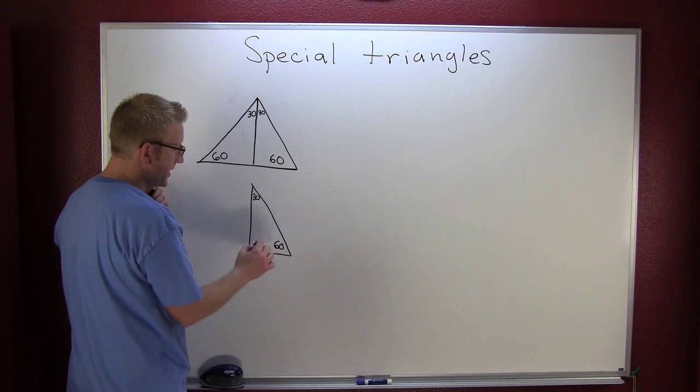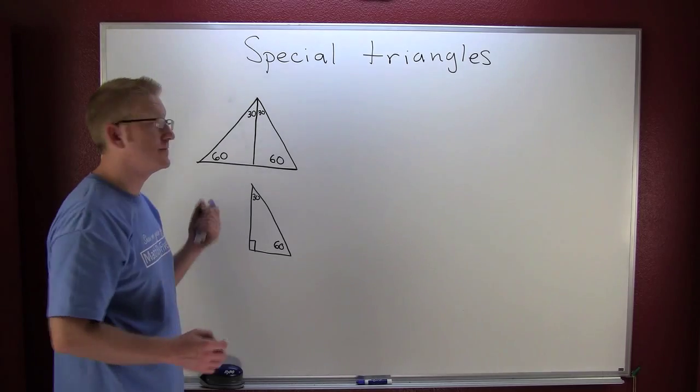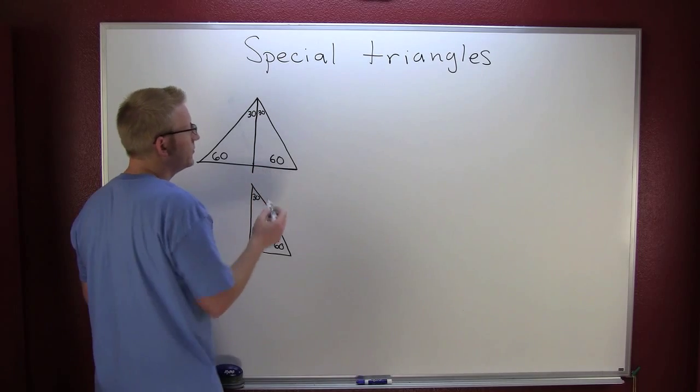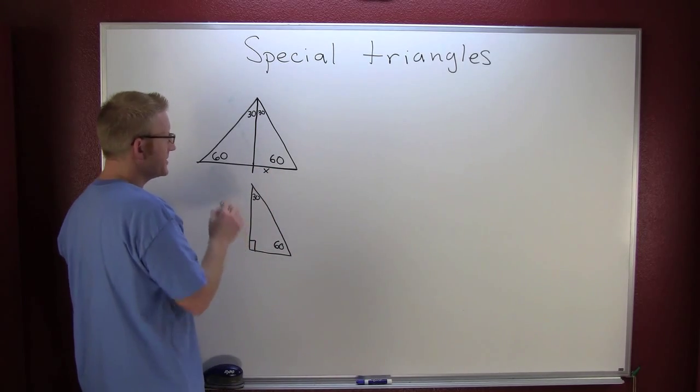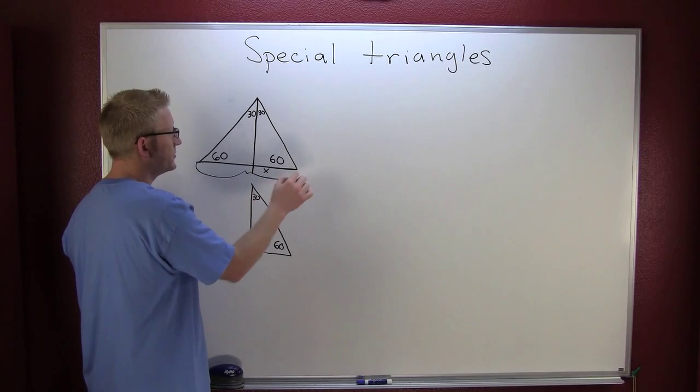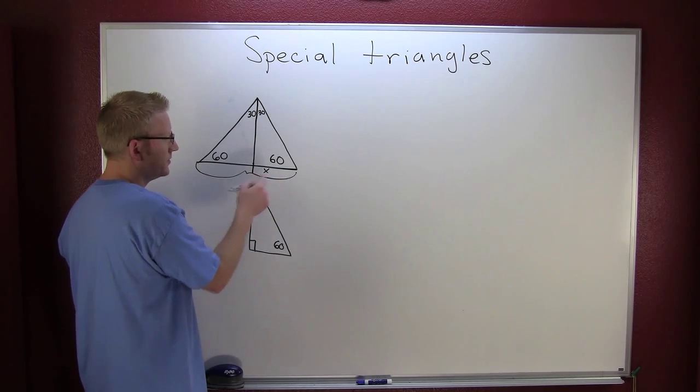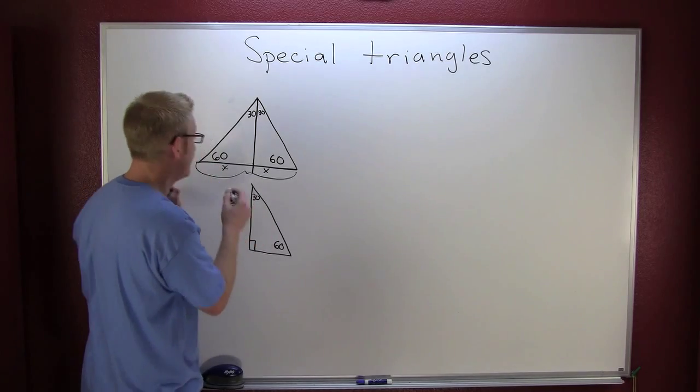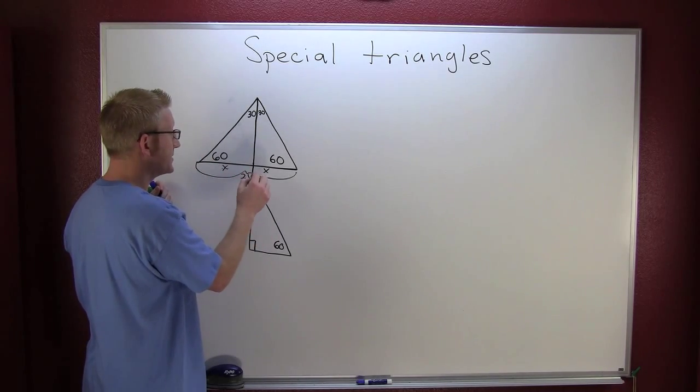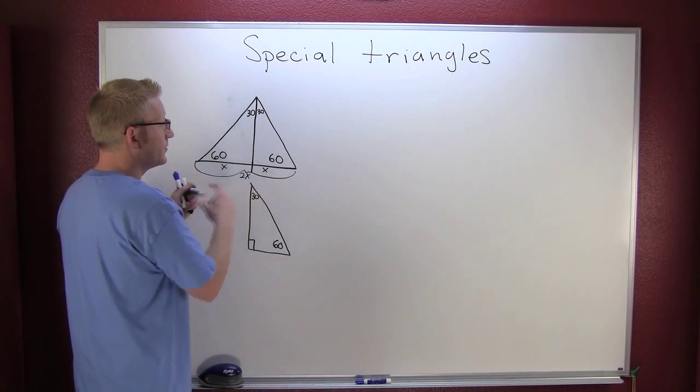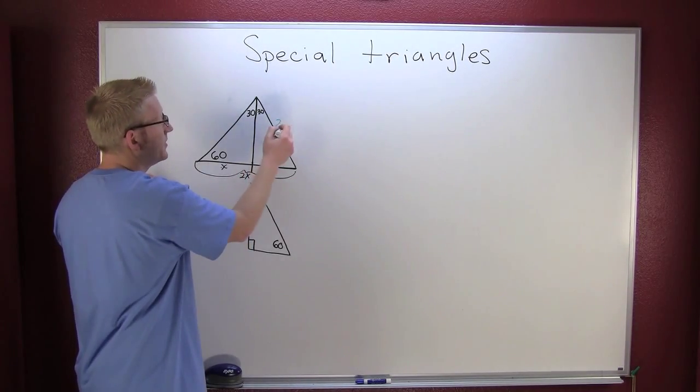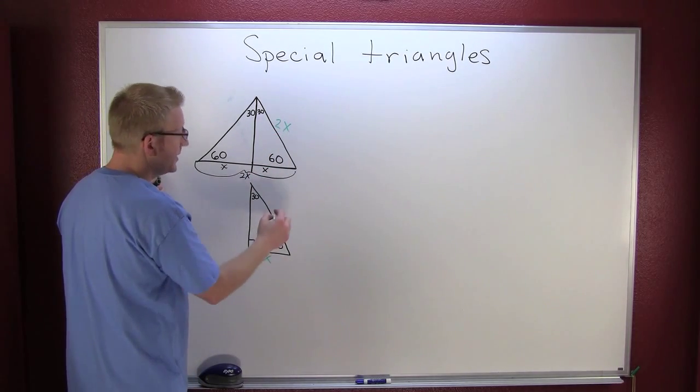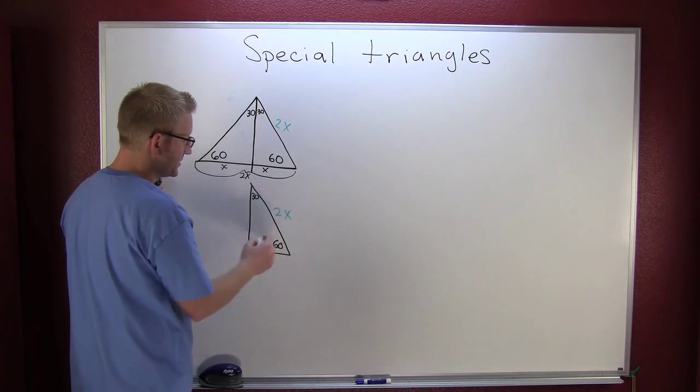Now I just want to consider one half of that triangle where this one's 30, this one's 60, and this one's 90 because my altitude is perpendicular to my other side. This little piece here is x. What's that whole side? That one's also x because it bisected that side. So the whole side is 2x. But this is an equilateral triangle so this one is also 2x.